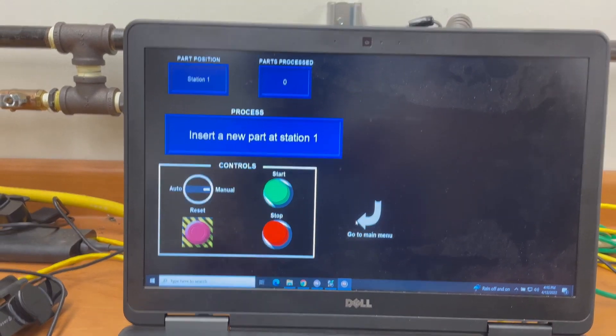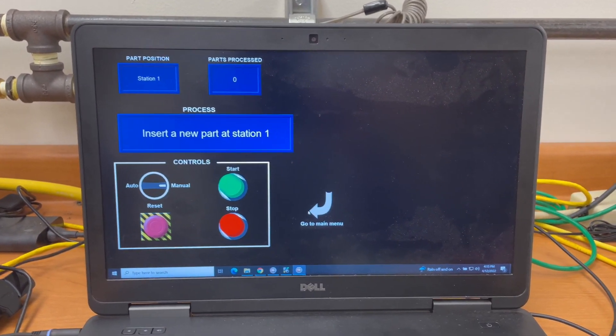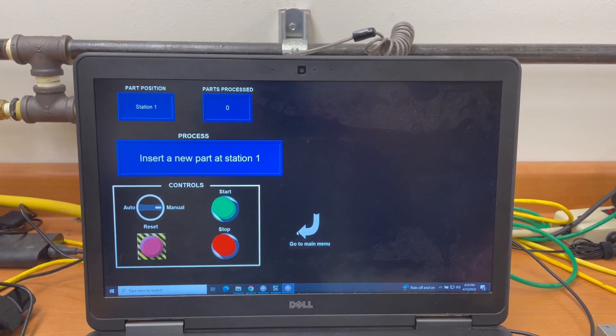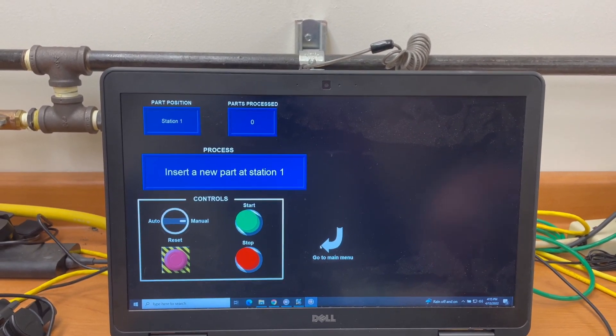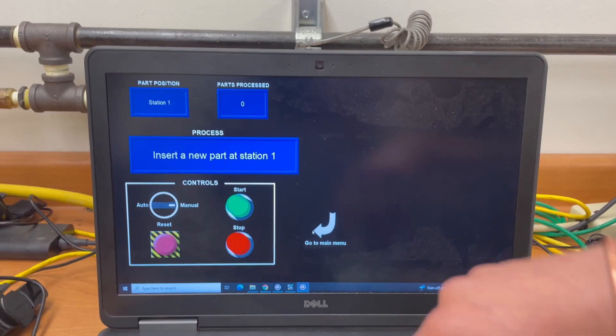Here we have different local display messages and a different set of controls over here. So you can see that the selector switch is placed in the manual mode. Which means that I have to press the start button for each step of the process. You can see that there is a message saying that we need to insert a part at station one. So we will be doing the same.